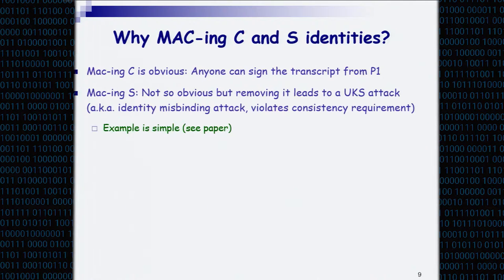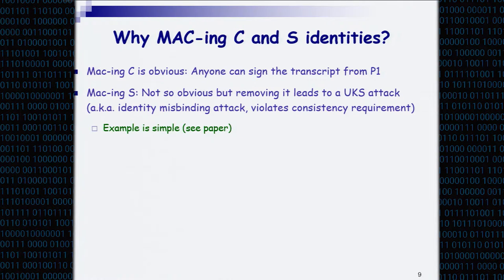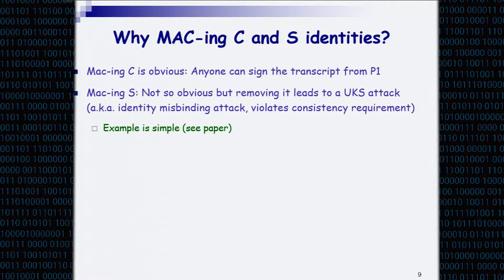This CSM message is supposed to take any unilateral protocol and upgrade it to a mutually authenticated one. Why do we MAC both identities? MACing the identity of C is obvious: if you only sign the transcript, then anyone can come and sign the transcript knowing or without knowing the session key — so that's definitely not enough. You need to MAC the client to bind it to the session key. MACing the identity of S is less obvious, but if you don't do that, we can show attacks — you can look at them in the paper.